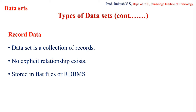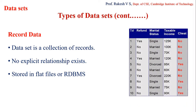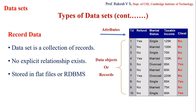Record data is a dataset which is a collection of data objects, also called records. It is generally represented in a tabular form having a fixed number of data fields called attributes and n number of records. These data objects will have a fixed number of attributes — for example, five attributes and ten records — and generally attributes here do not have explicit relationships among themselves. Record data can also be stored in flat files or RDBMS.